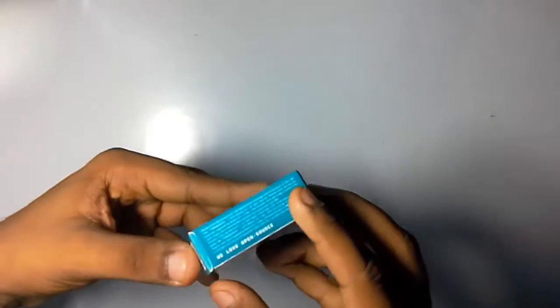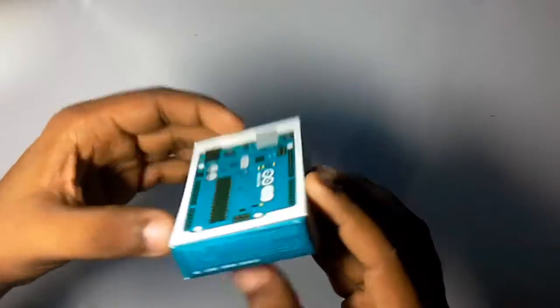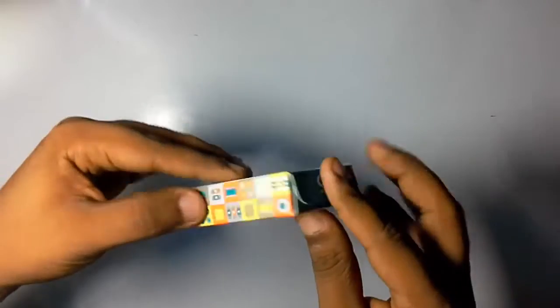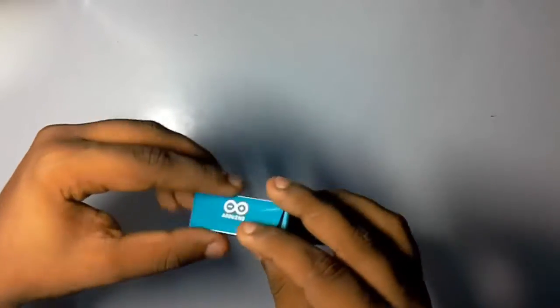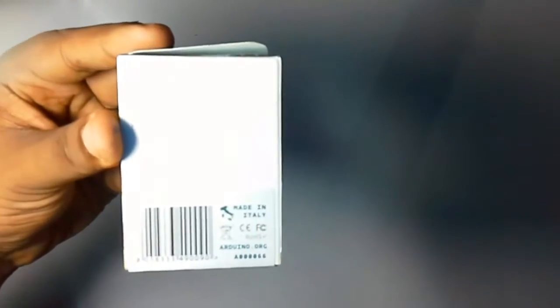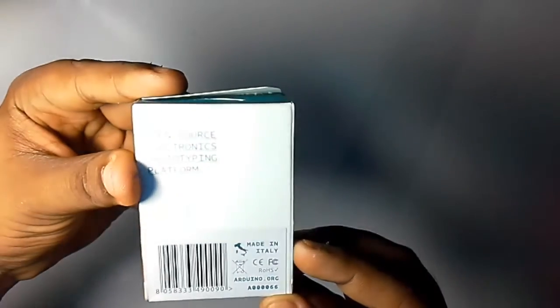This is the front side of the box. On the side you can see 'open source' below the code, and on this side there are pictures of some ICs and the Arduino logo. On the back you can see 'Made in Italy' and a small map of Italy, along with 'open source electronics prototyping platform.'